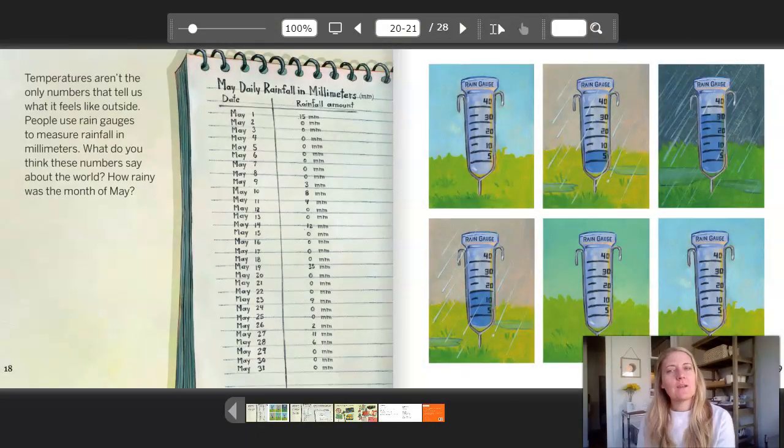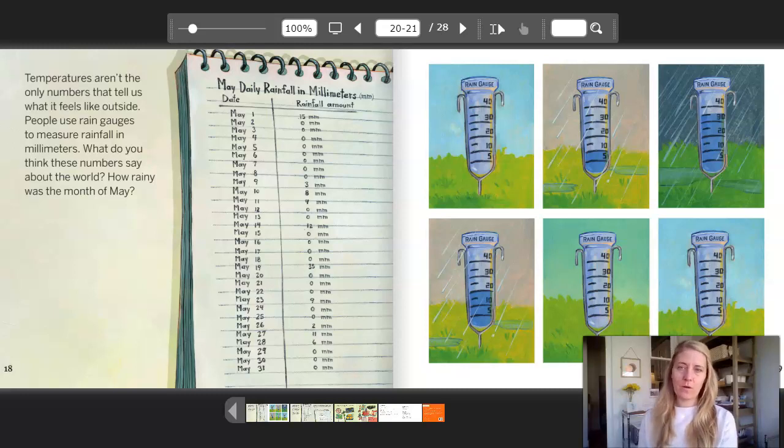Temperatures aren't the only numbers that tell us what it feels like outside. People use rain gauges to measure rainfall in millimeters. What do you think these numbers say about the world? How rainy was the month of May? On the notepad it says May Daily Rainfall in Millimeters, and then you can see all the days in May and all the millimeters for every single day. That's a lot of numbers.